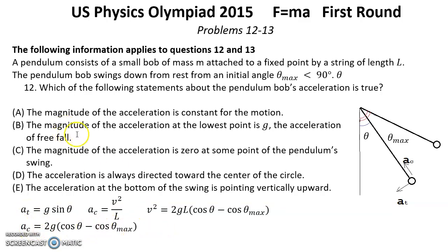B: The magnitude of the acceleration at the lowest point is g, the acceleration of free fall. In the lowest point we have tangential equal 0 and the centripetal equal 2g multiplied by cosine theta, which is 1 minus cosine theta maximum. So that's not g.